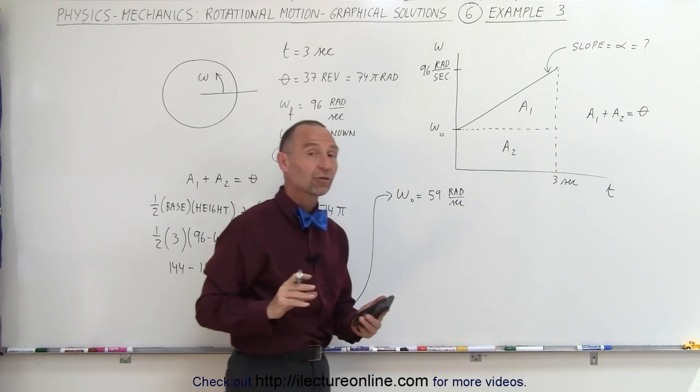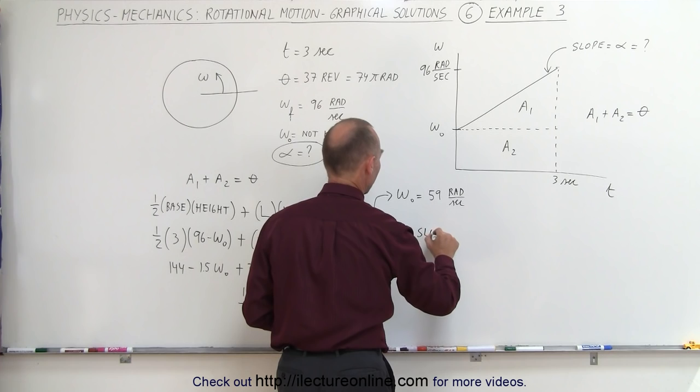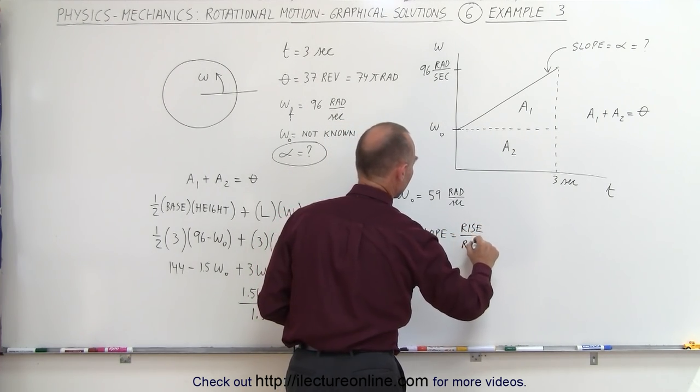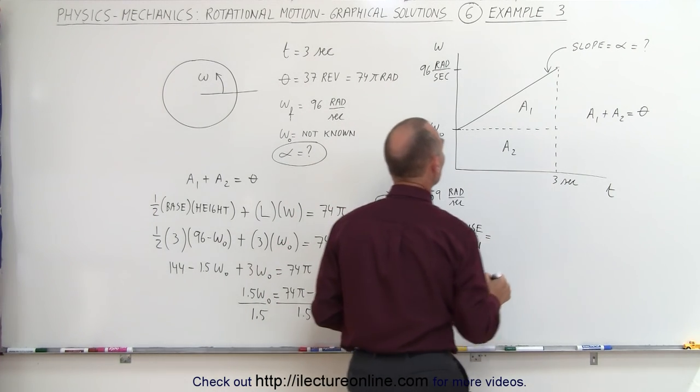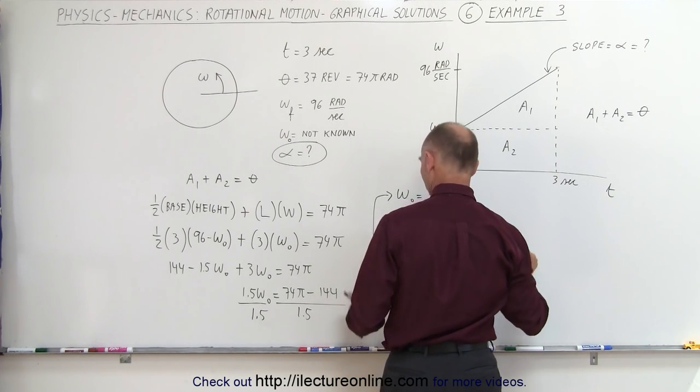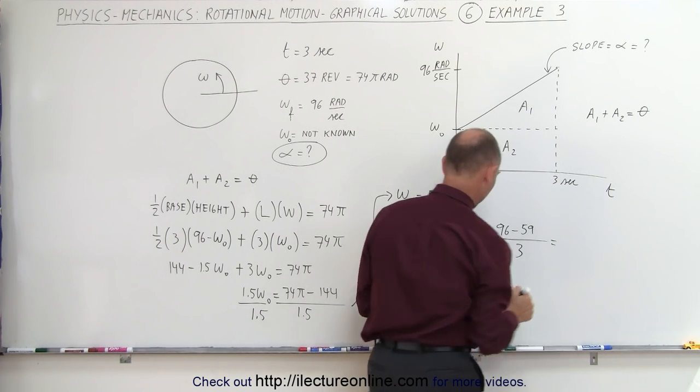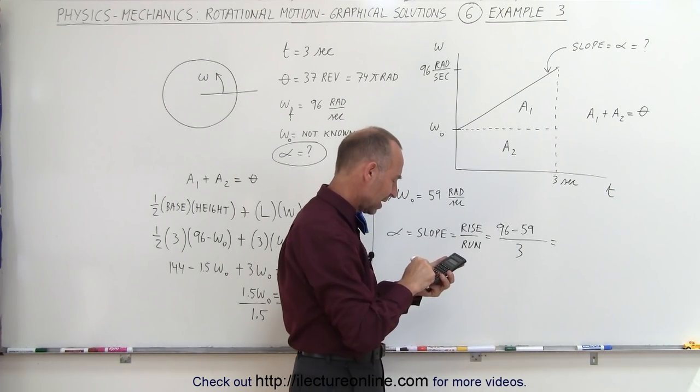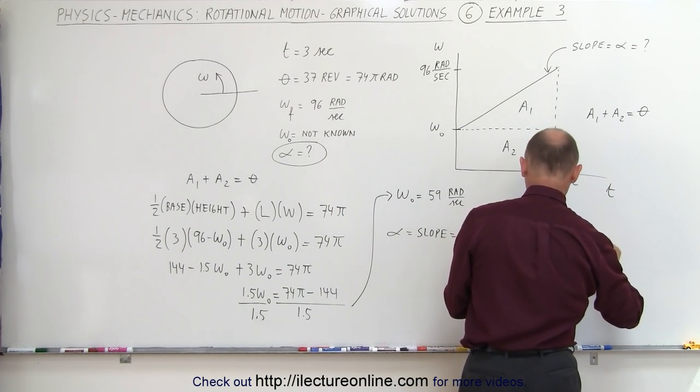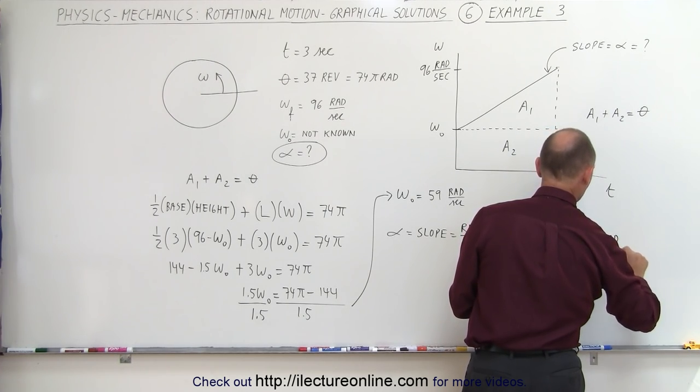Finally, I can now solve for the slope, which gives us the angular acceleration. The angular acceleration is equal to the slope, which is equal to the rise divided by the run. The rise would be from omega sub naught to 96, which is 96 minus 59. That's the difference between those two values, and the run would be 3 seconds. So we get 96 minus 59 divided by 3, and that gives us 12.33, and that would be radians per second squared.